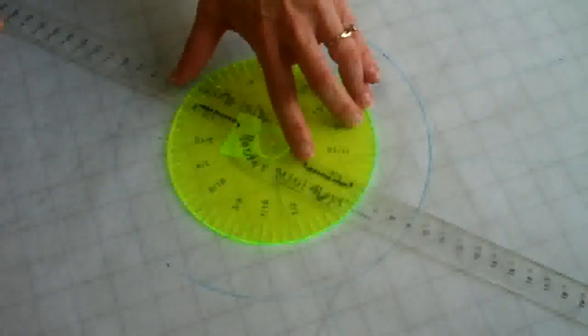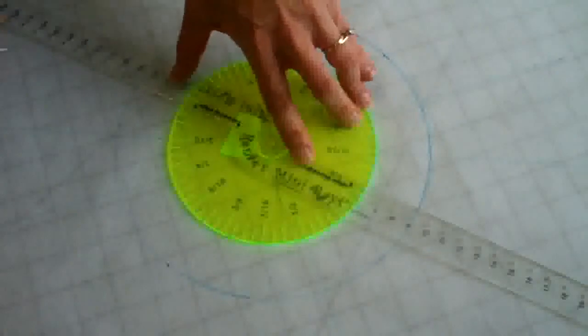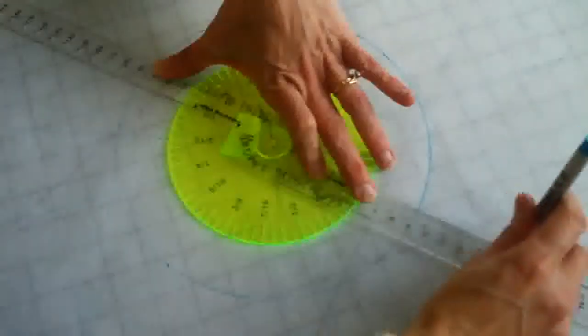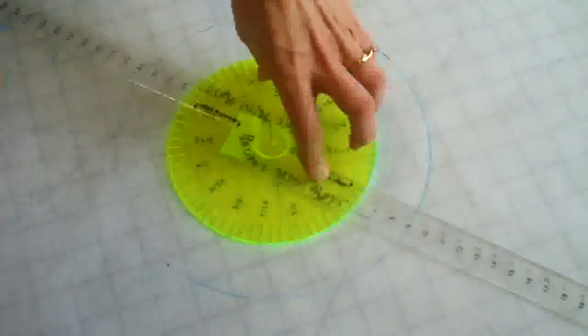Like any kind of marking, it's only as accurate as you are when you're doing it. If your ruler slips, you have to realign. Make sure you've got it on there just right.